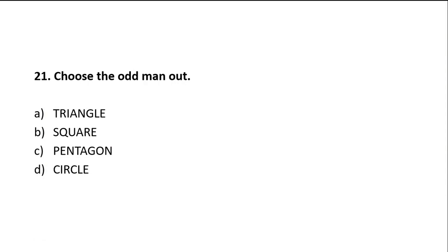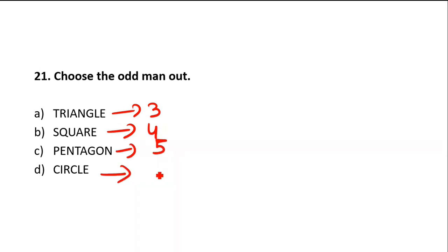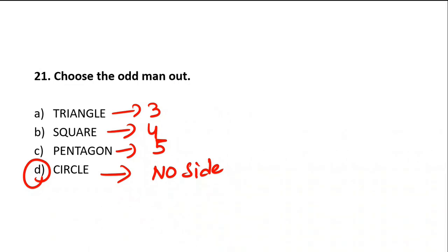Very simple question — just by looking at it you can answer. Choose the odd man out: Triangle, Square, Pentagon, Circle. All are geometrical figures. Triangle has three sides, Square has four sides, Pentagon has five sides, and Circle has no sides. So Option D — Circle — is the answer, as it has no sides.